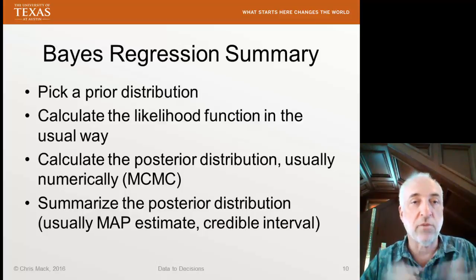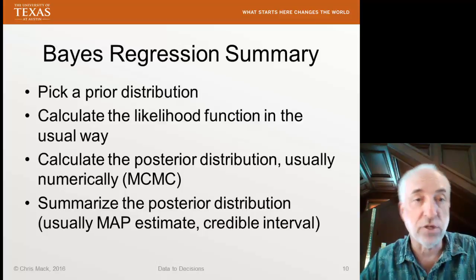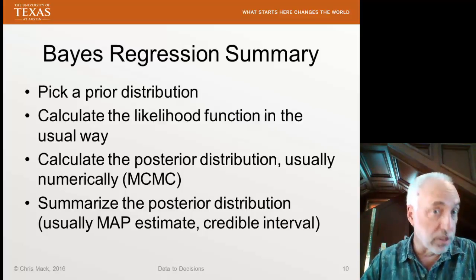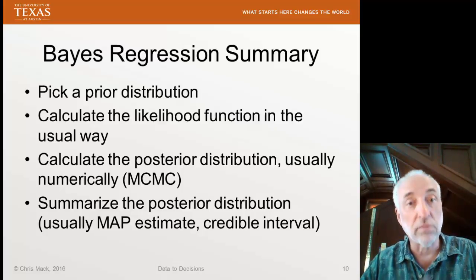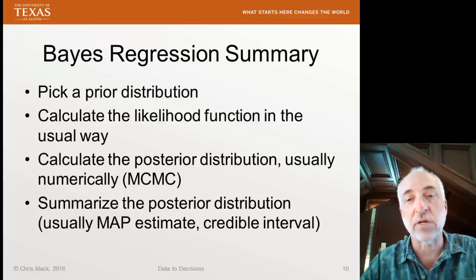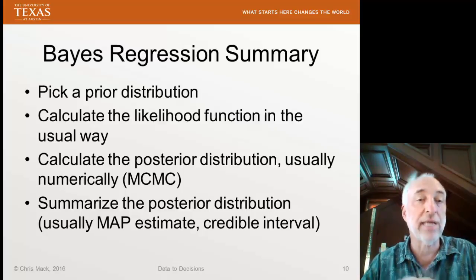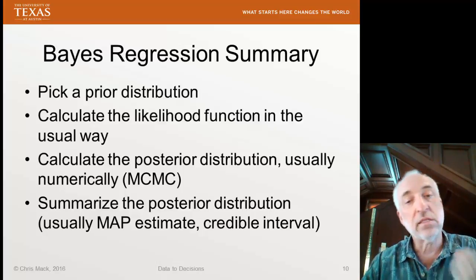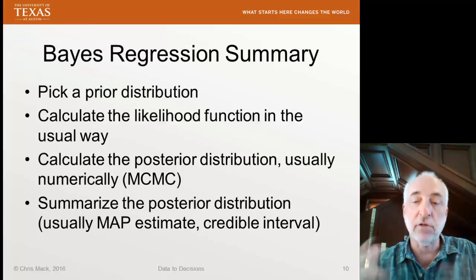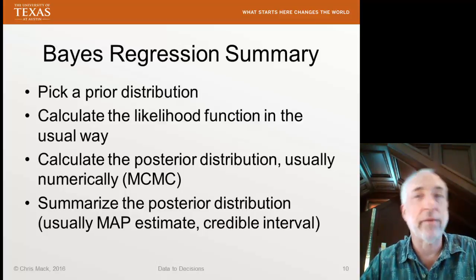Let's summarize Bayesian regression. In general, we pick a prior distribution — often Gaussian — for all parameters and also for the random error. We calculate the likelihood function in the usual way, then calculate the posterior distribution as the product of those two, typically using Markov chain Monte Carlo sampling. We then summarize the posterior distribution with a MAP estimate, which is our equivalent to a best fit parameter with credible intervals around it.